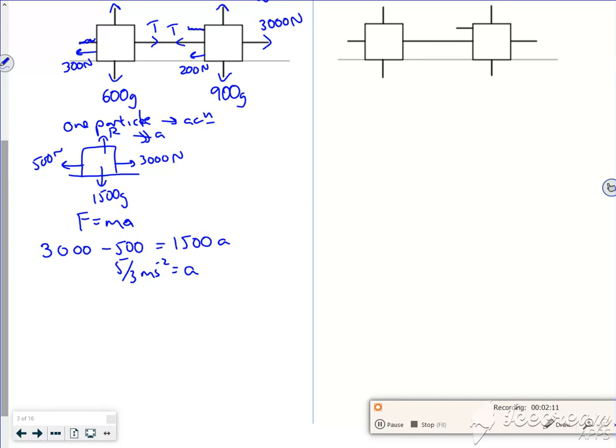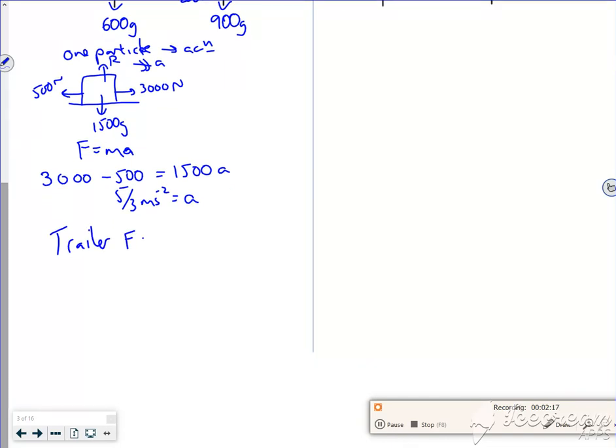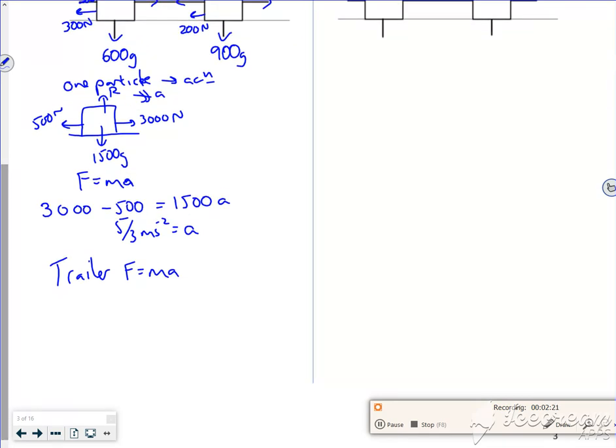So I've found my acceleration. So now let's just look at the trailer. So if I do F equals ma on the trailer, I've got my little T. So I've got T is the force in the direction of travel, 300 is opposing it. That's equal to a mass of 600 times by 5/3. So if I take the 300 over, that'll give me 1300 newtons.